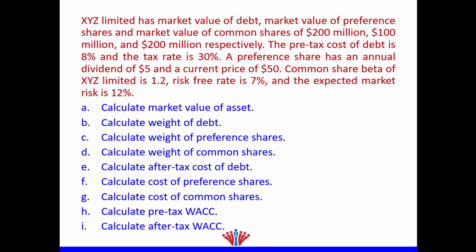The pre-tax cost of debt is 8%, the tax rate is 30%. A preference share has an annual dividend of $5 per share and a current price of $50. The common share beta of XYZ Limited is 1.2, the risk-free rate is 7%, and the expected market return is 12%. We need to calculate: market value of assets, weight of debt, weight of preference shares, weight of common shares, after-tax cost of debt, cost of preference shares, cost of common shares, pre-tax WACC, and after-tax WACC.